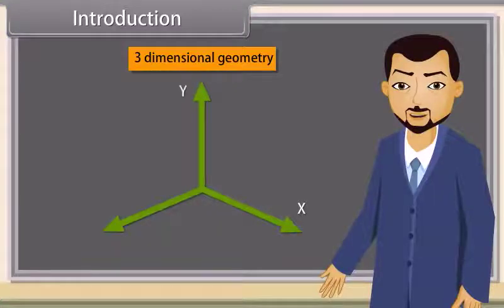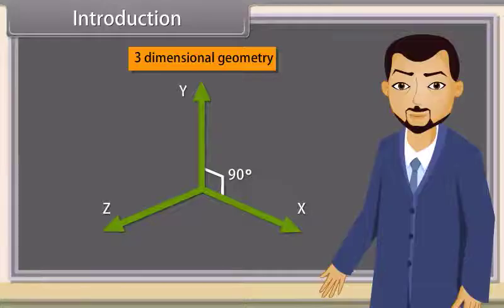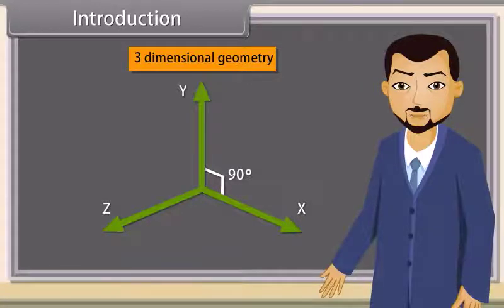What is the angle in between these 3 axes? The angle in between the axes is 90 degrees. Well said, so let's move further. In this lesson you will learn 3 dimensional geometry.